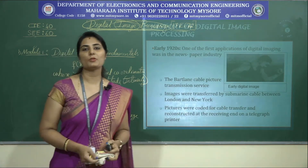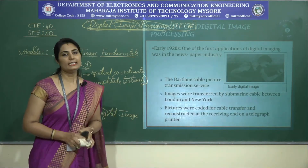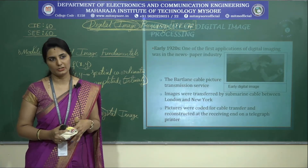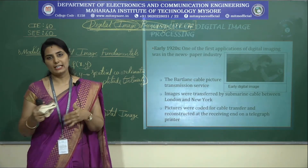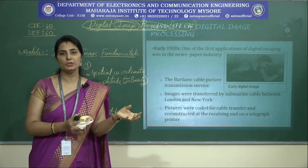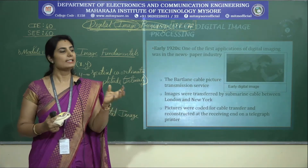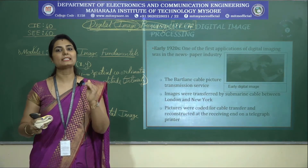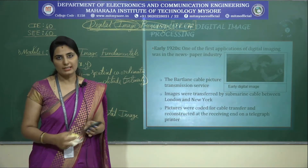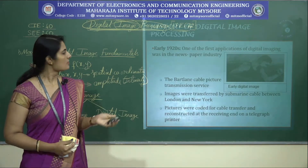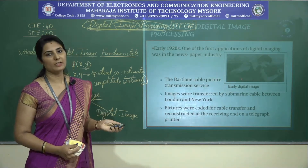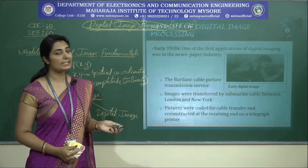Next is the history of digital image processing. Early in the 1920s, the first application of digital images was in the newspaper industry. With the introduction of the Bartlane cable picture transmission system, the first digital image was transmitted between London and New York by submarine cable. These images were coded using 5 tones — that is, 5 discrete intensity levels — and reconstructed at the receiving end using telegraph printers.